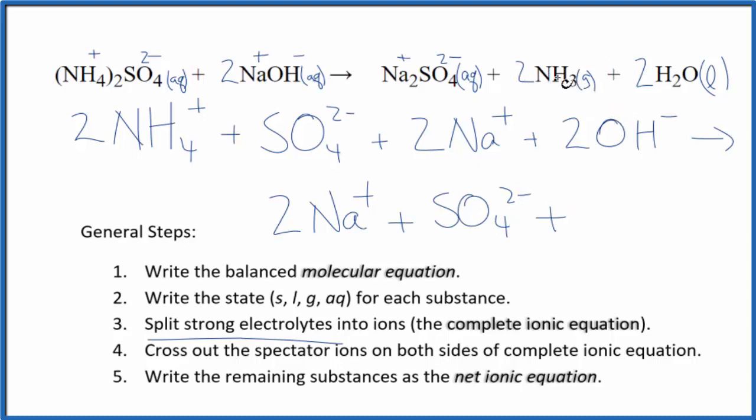And then we said our ammonia here is a gas. If it was aqueous, we wouldn't split it apart either. So we're going to keep this together as 2NH₃. And then we have two water. We don't split liquids apart either. So this is the complete ionic equation.